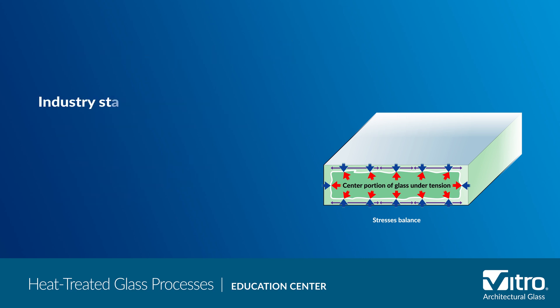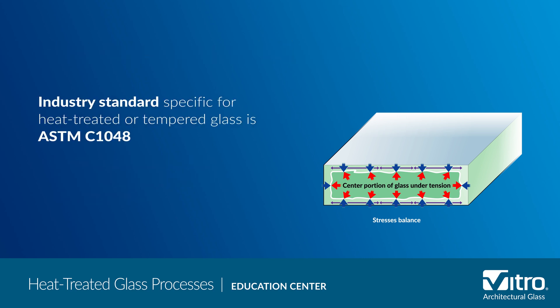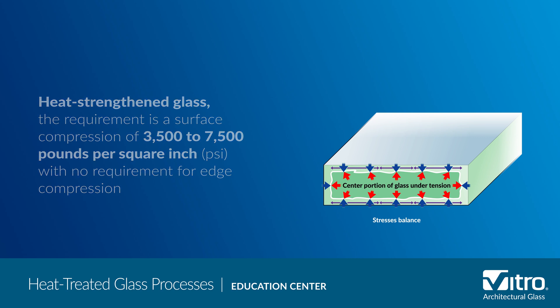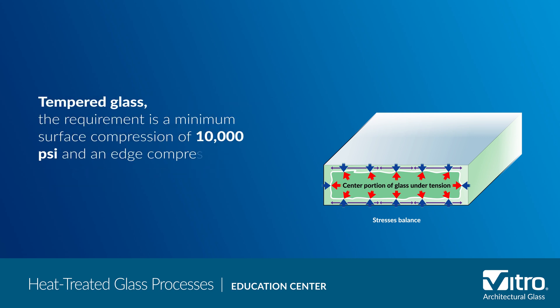The industry standard for heat treated or tempered glass is ASTM C1048. For heat strengthened glass, the requirement is a surface compression of 3,500 to 7,500 psi with no requirement for edge compression. For tempered glass, the requirement is a minimum surface compression of 10,000 psi and an edge compression of at least 9,700 psi.